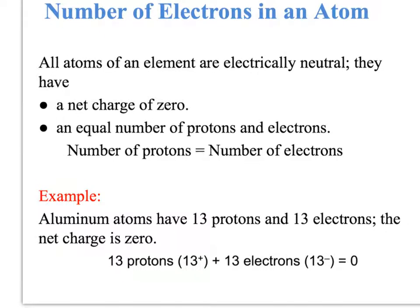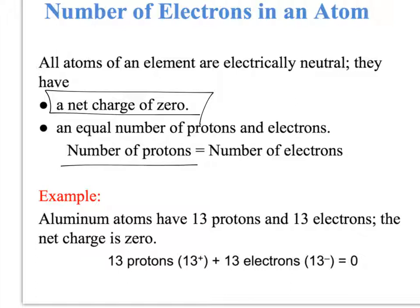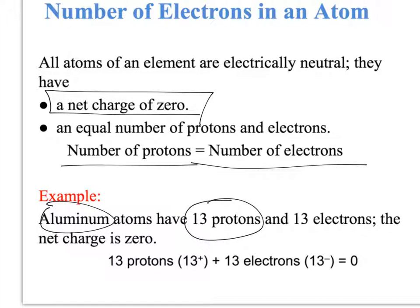All the atoms in an element are neutral, meaning that they have a net charge of zero. Therefore, the number of protons is equal to the number of electrons. So if we see aluminum and we see that it has 13 protons, we know immediately that for the atom to be neutral, it must have 13 electrons.